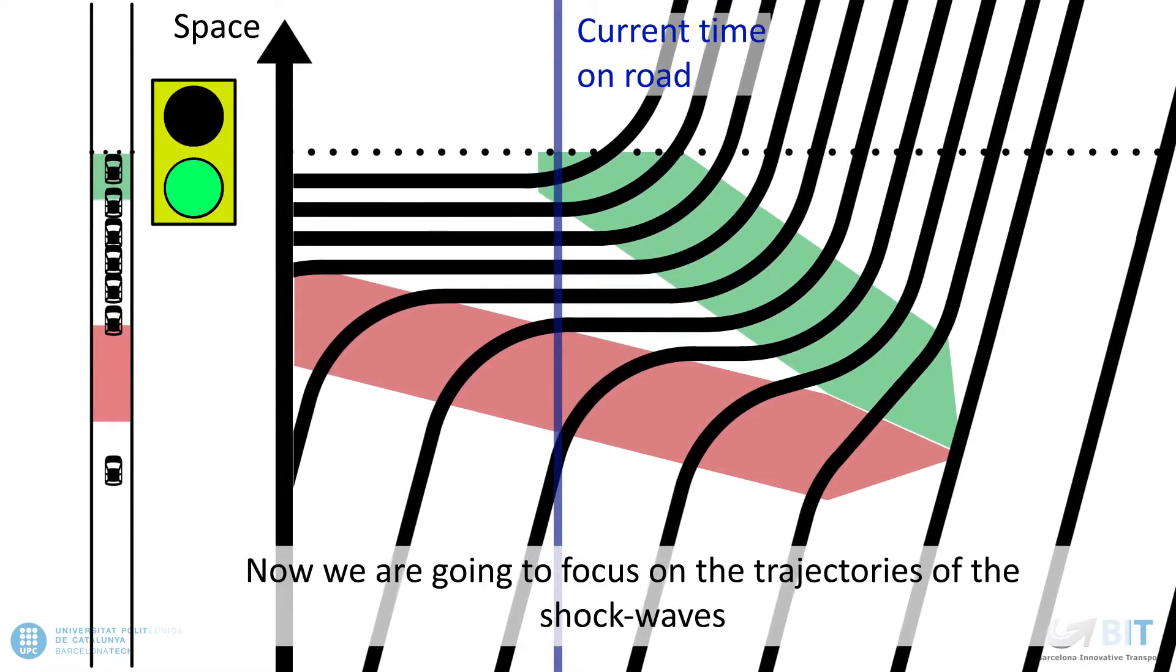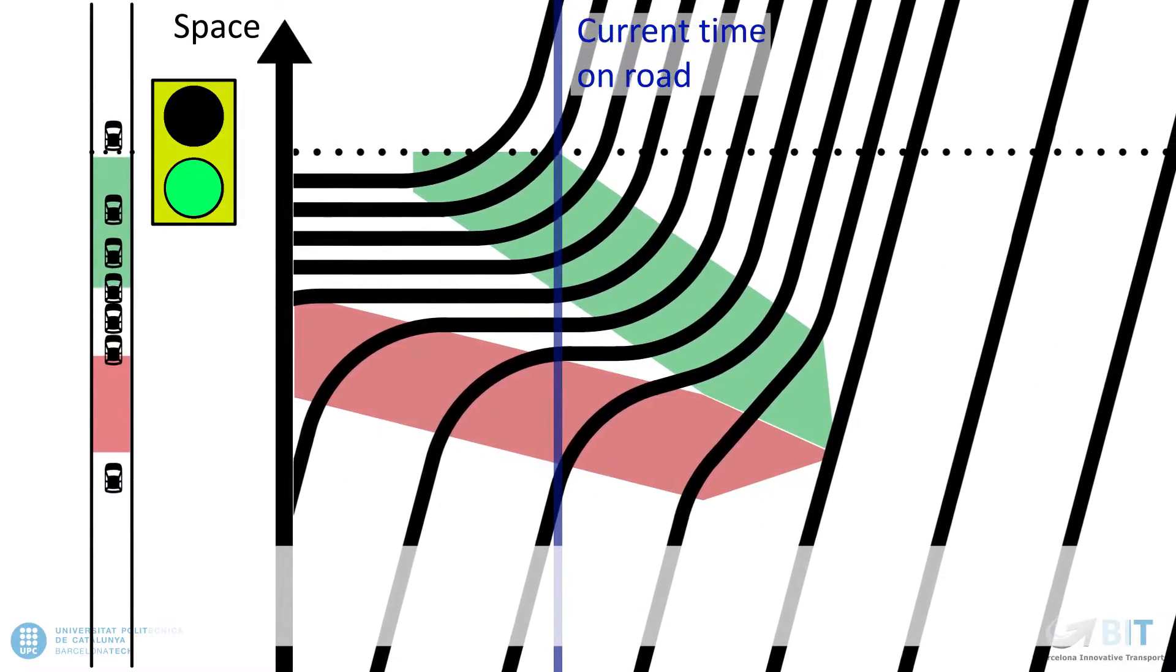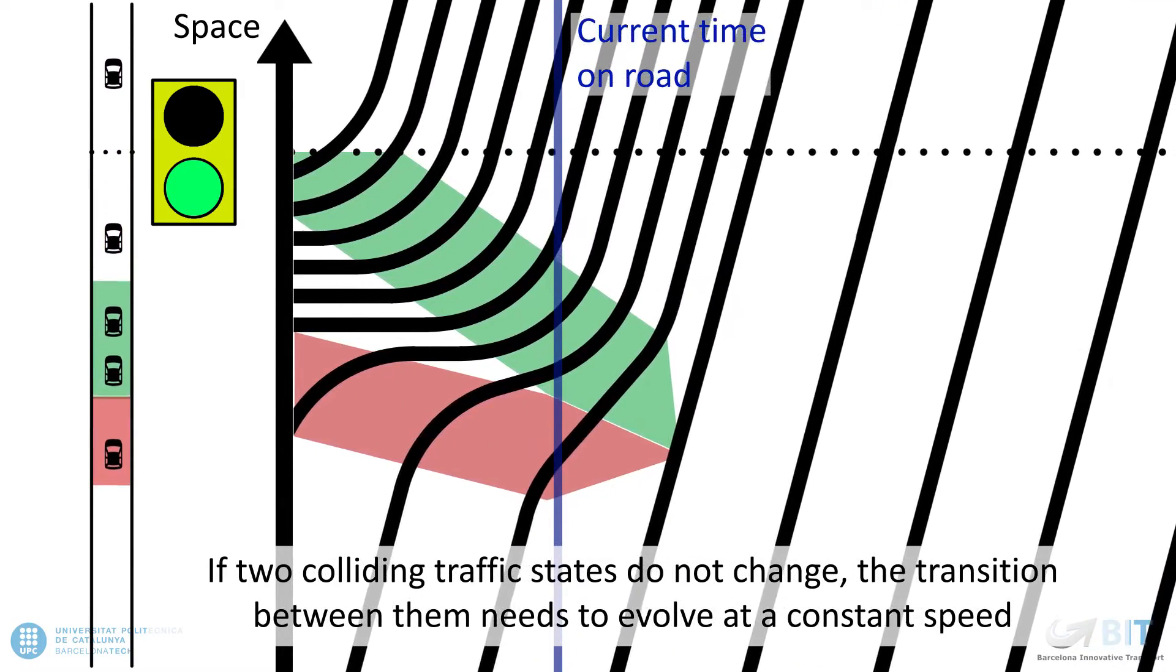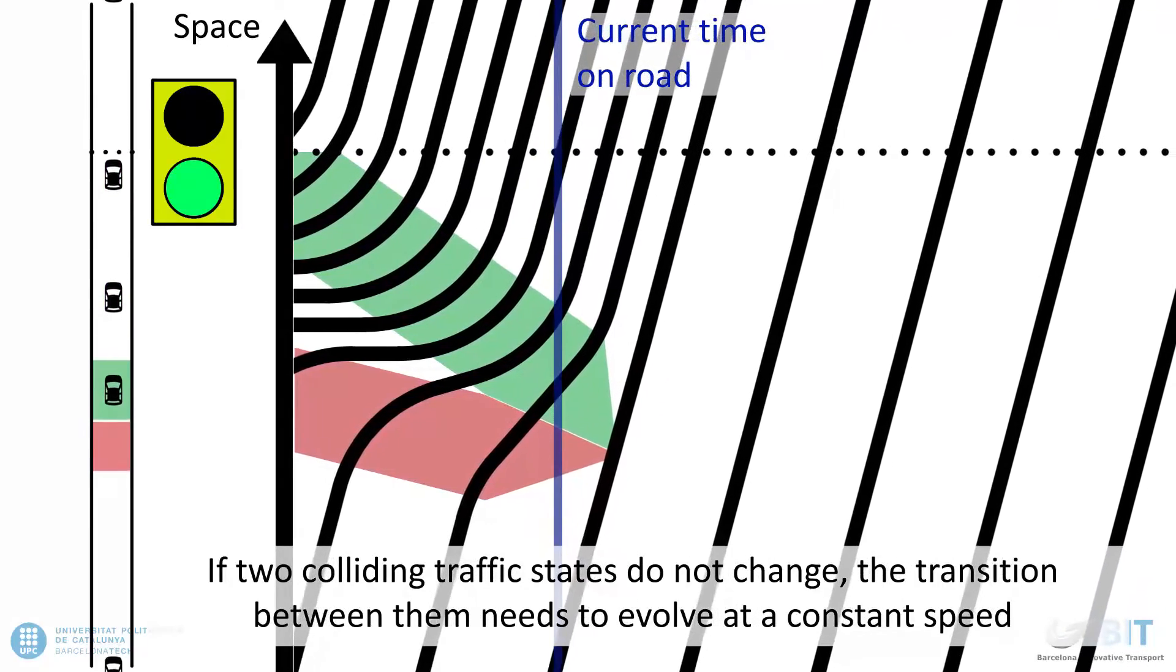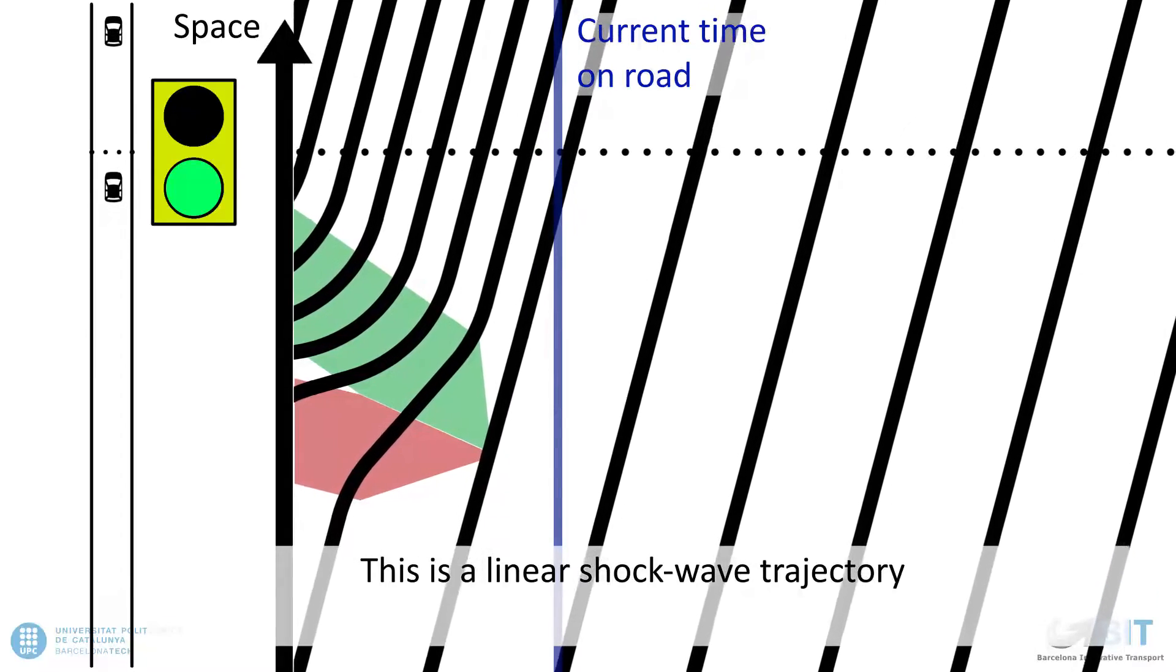Now, we are going to focus on the trajectories of the shock waves. If two colliding traffic states do not change, the transition between them needs to evolve at a constant speed. This is a linear shock wave trajectory.